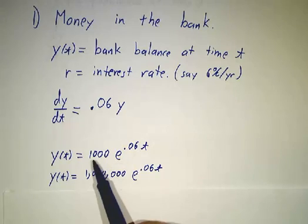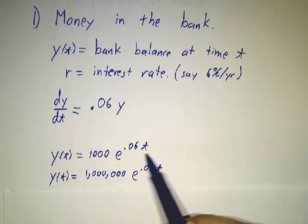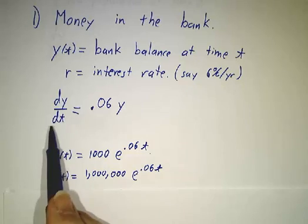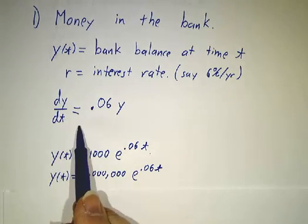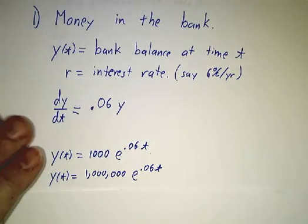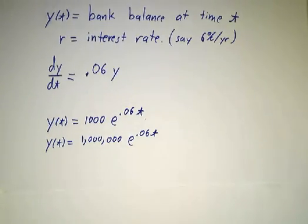If you start off with a thousand dollars, this describes how much you have at time t. If you start off with a million dollars, this is what you have at time t. Now we're going to solve equations much like this in detail going forwards. For now, let's move to the next model after one more wrinkle.